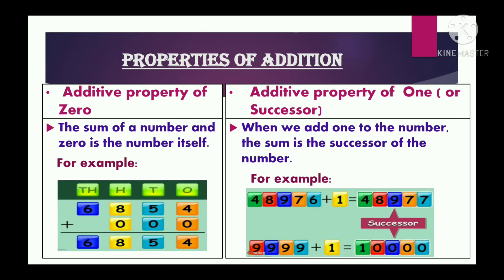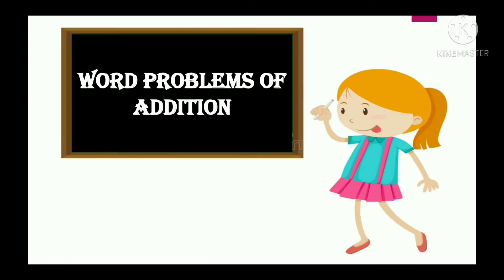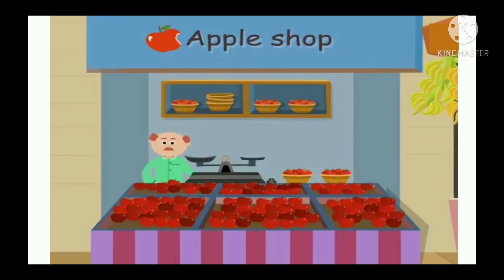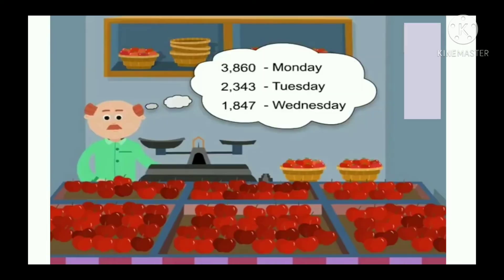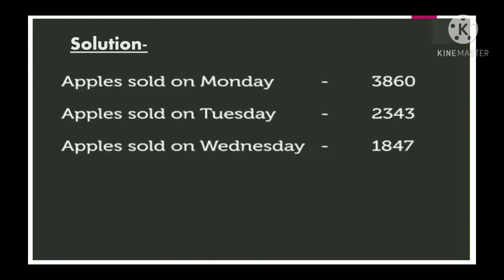I hope you have understood the properties of addition as we have discussed each property. Now let's talk about word problems of addition. Here is a story: Jamie is a shopkeeper who sells apples. He sold apples over 3 days and wants to find out how many total apples he sold. With the help of a word problem we can solve it.